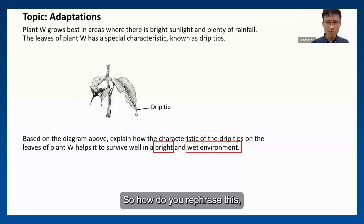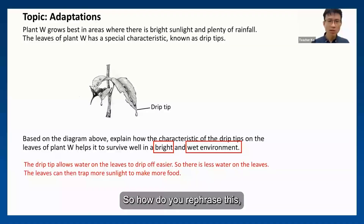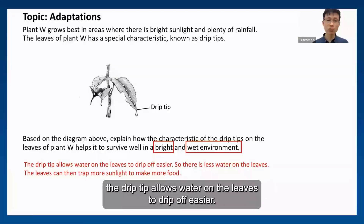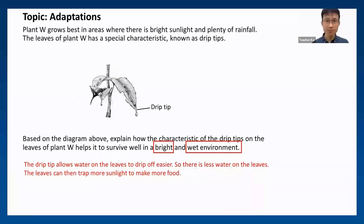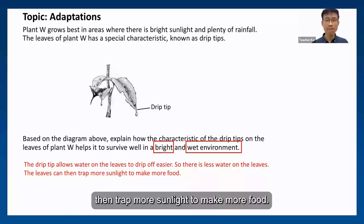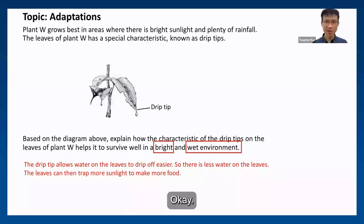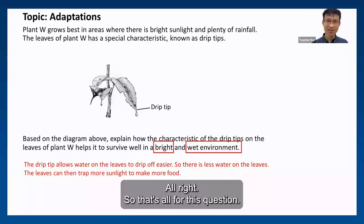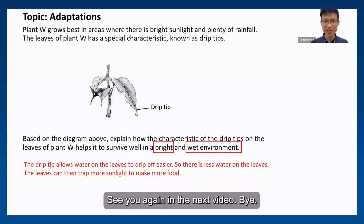So how do we phrase this? The drip tip allows the water on the leaves to drip off more easily, so there's less water on the leaves, and the leaves can then trap more sunlight to make more food. Alright, that's all for this question. See you again in the next video. Bye-bye.